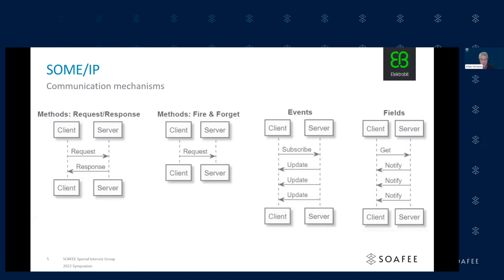Here are the communication mechanisms provided by SOME/IP. First, we have a request-and-response pattern: the client sends a request to the server and gets a response. There's also fire-and-forget, where the client sends a request without waiting for a response. Then there's the publish-subscribe pattern, where the client subscribes to the server and receives updates whenever something changes. Last but not least, we have fields, where the client can get a field from the server and is notified when something changes. The difference from events is that with events you only get an update when something changes, whereas with fields you always have the initial value.